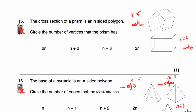Question number 15: circle the number of vertices the prism has. For the pentagonal prism (n=5): 5 vertices at the front and 5 at the back = 10 vertices. For the cuboid (n=4): 4 vertices at the front and 4 at the back = 8 vertices. The number of vertices is double n in both cases — 5×2=10 and 4×2=8. So the answer is 2n. A hexagonal prism (n=6) would have 12 vertices.